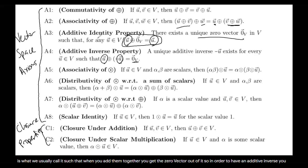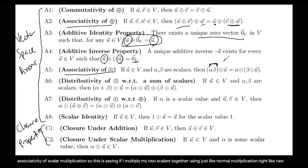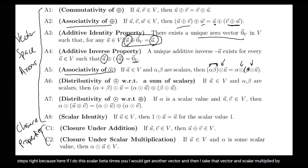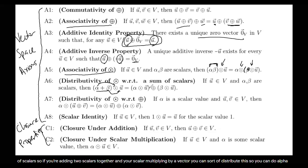Next is associativity of scalar multiplication. Just as we had associativity of vector addition, this says that if I multiply my two scalars together using normal multiplication and then do the scalar multiplication, that's the same as doing the scalar multiplication in two steps — taking beta times u to get another vector, and then scalar multiplying by alpha. Then there's distributivity of scalar multiplication with respect to a sum of scalars: if you're adding two scalars alpha and beta and scalar multiplying by a vector u, you can distribute and do alpha times u plus beta times u.